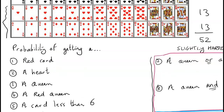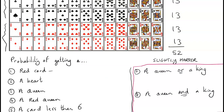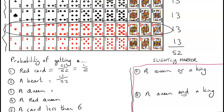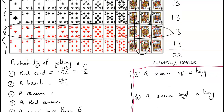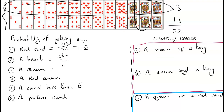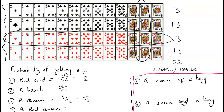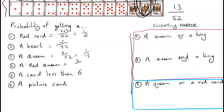The probability of getting a red card drawn at random: there are 26 red cards, so 26 over 52, which simplifies to a half. The probability of getting a heart: 13 out of 52. A queen: there are 4 queens — one per suit — so 4 out of 52, which simplifies to 1 over 13. A red queen: only 2 of those, so 2 out of 52, which simplifies to 1 over 26.